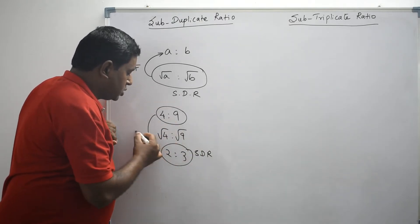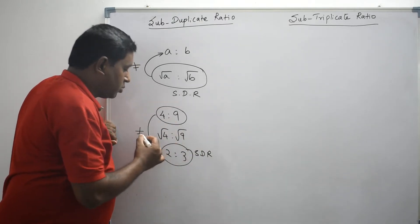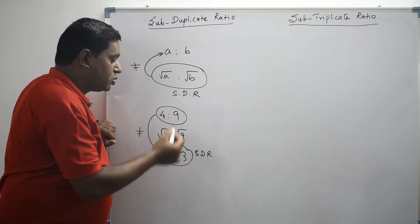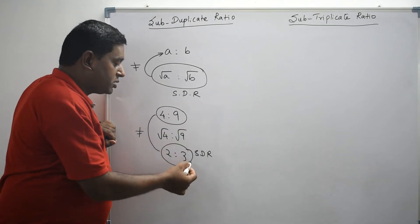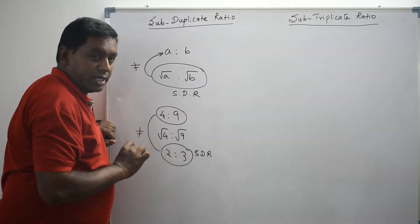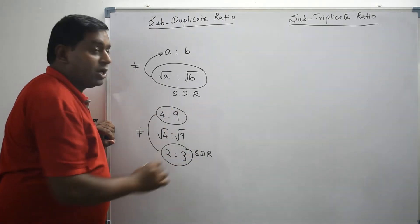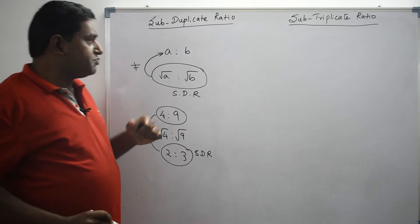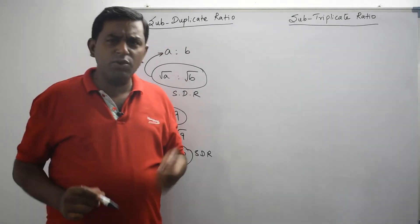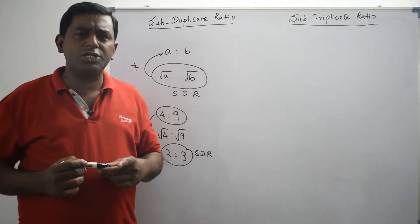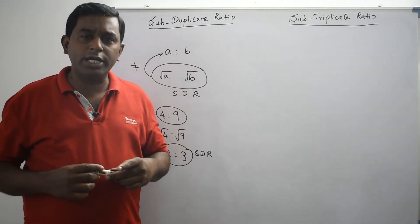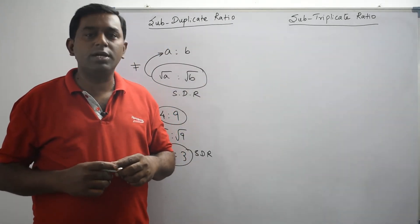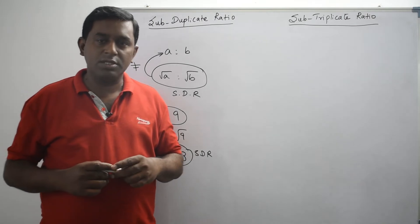These two ratios are not equal. 4 is to 9 is the given ratio; 2 is to 3 is the subduplicate ratio of 4 is to 9. So if you want to get subduplicate ratio, what you have to do is you have to take square root for both the first term and second term.